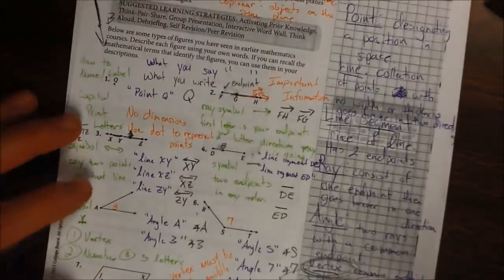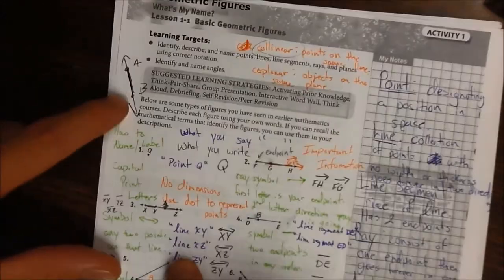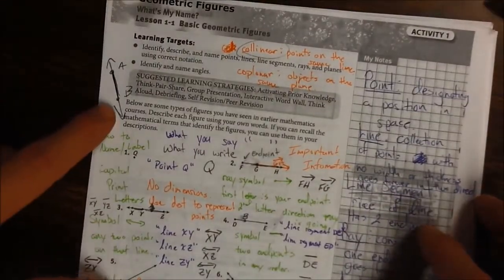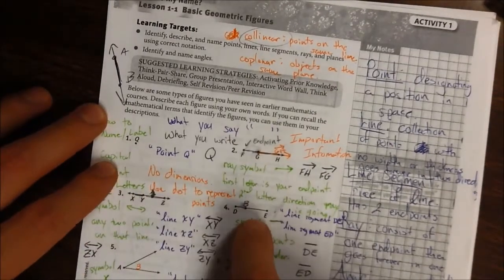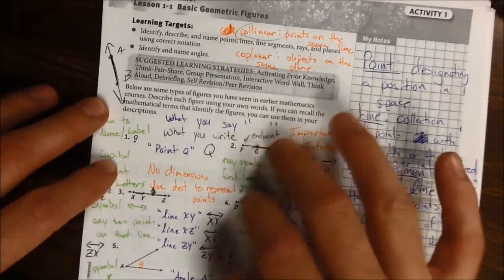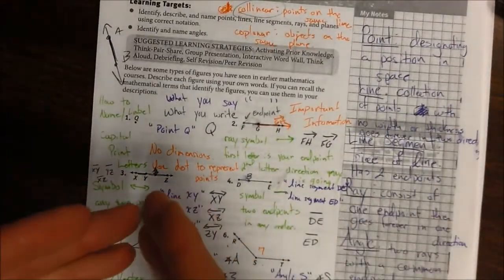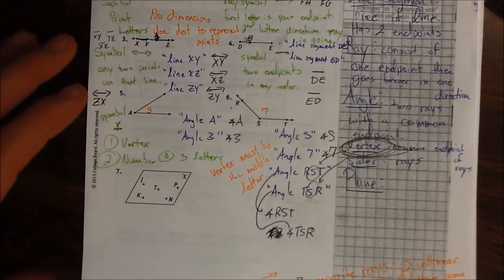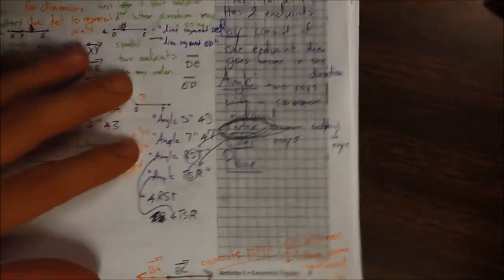So we first talked about a point, and that had zero dimensions. And then we said, well, what if we have two points? Then we can draw a line through it. And so once you do that, once you have two points and you have a line or a piece of a line, you have to understand that these are one-dimensional objects. They have some sort of length. And now we get into item 7, this geometric figure. This is a plane, and this is a two-dimensional figure.